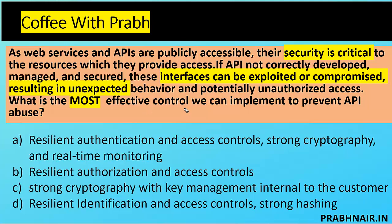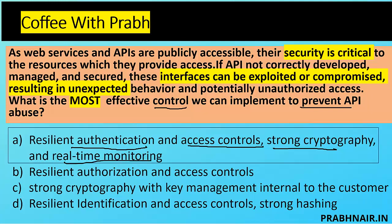The question is specifically asking what is the most effective control to prevent API abuse. Option A includes resilient authentication, appropriate access control, strong cryptography, and real-time monitoring — making sure only authorized APIs are used, authorization is in place, data is passed securely via cryptography, and monitoring is active. This looks like a defense-in-depth approach. Option B covers resilient authorization and access control but doesn't address data security. Option C covers strong cryptography with key management but only focuses on encryption. Option D covers identification, access control, and strong hashing but doesn't include real-time monitoring. Since B and C are parts of A, the answer is A.